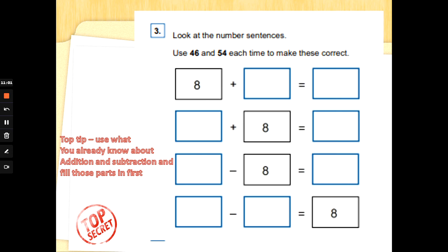Number three. Look at the number sentences. Use the number forty-six and fifty-four each time to make these correct. So this is trying to see if you can remember what you know about addition and subtraction. You're moving the numbers around. You don't actually have to do any working out here. We need to use what we already know about addition and subtraction to fill in those parts first. When we add, we always end with the biggest number. So fifty-four is the biggest number. So I'm going to put fifty-four at the end of both of those addition sums. Now subtraction is the opposite, and we always start with the biggest number. So I'm going to use what I know about subtraction and put fifty-four at the beginning of the subtraction sum. And then all we need to do is put forty-six in the empty boxes. We know fifty-four, we subtract from the biggest number. Well done. And then we fill in all the boxes. We've got to put a number in every box to get the point. We can't leave any boxes blank. Well done.